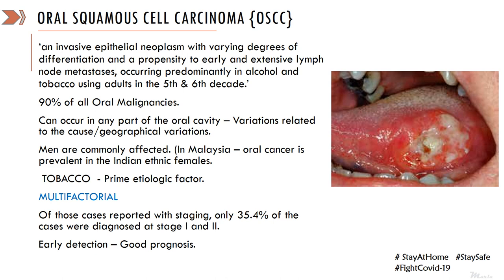Oral squamous cell carcinoma can occur in relation to the tongue, buccal mucosa, buccal vestibule, and labial mucosa. Rarely it can occur in the palate or other regions as well. These variations are related to the etiological cause, and geographical variations have also been noted. Globally, oral squamous cell carcinoma has been predominantly encountered in men; however, in Malaysia, the prevalence of oral cancer is seen in Indian ethnic females.